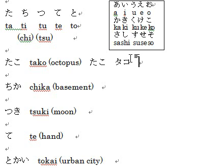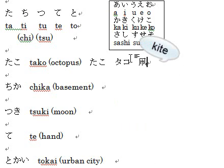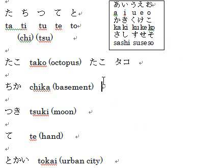If it's not the octopus — actually there's another meaning for TAKO, which is kite. The kite is this one. OK?